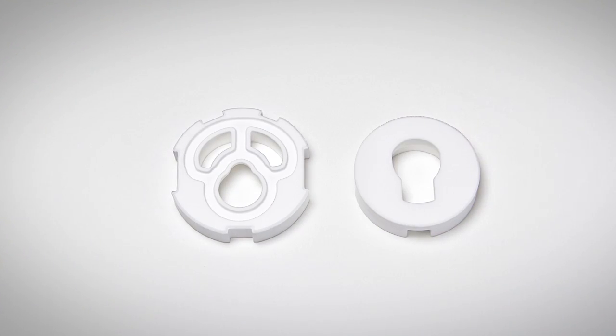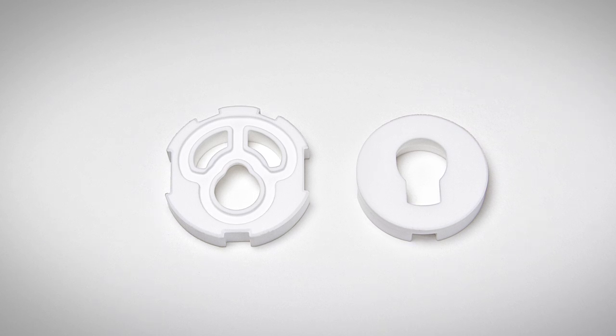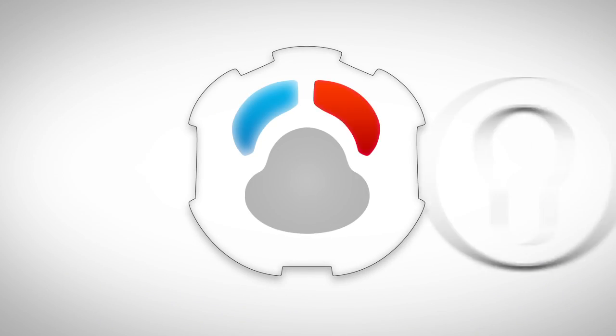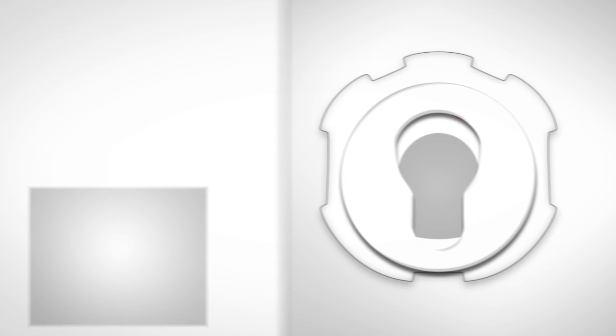What does a cartridge actually do? It combines the hot and cold water within the mixer and regulates the water volume. This is mainly done by ceramic discs, which are simply controlled using the handle.